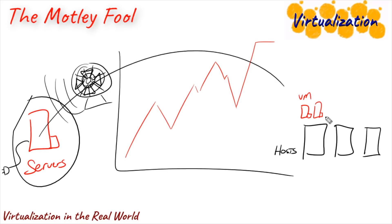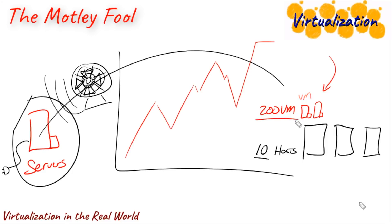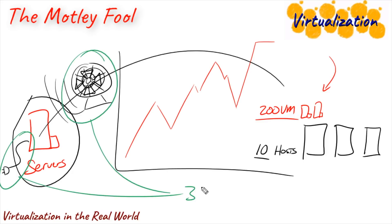They also get new advantages because they can start using templates and roll these out nearly as fast as you could create a new Word document. They moved from their existing infrastructure to having 10 very powerful hosts supporting more than 200 virtual machines. And by changing what was required for direct power and cooling, they were able to end up saving 33% on their power utilization. The Motley Fool is a great example of just being able to immediately save money.